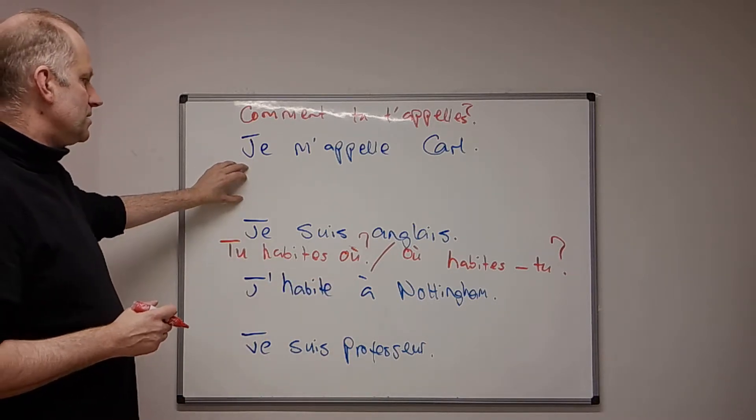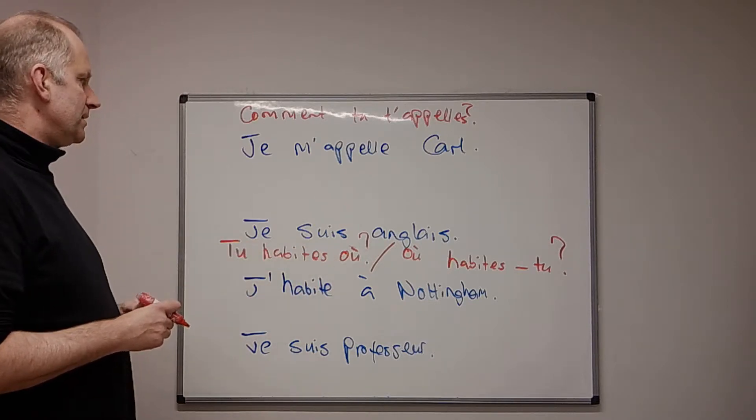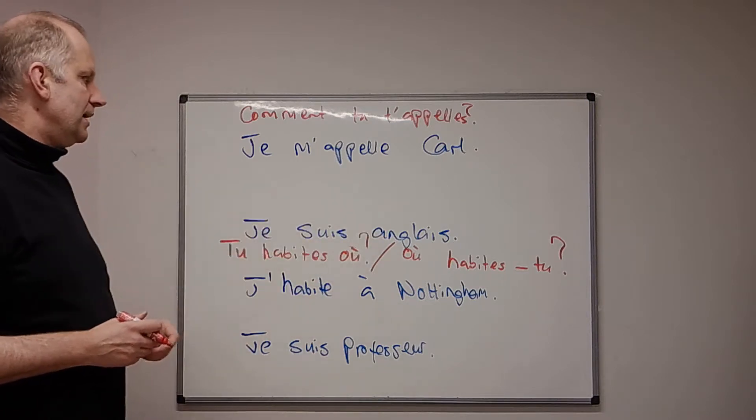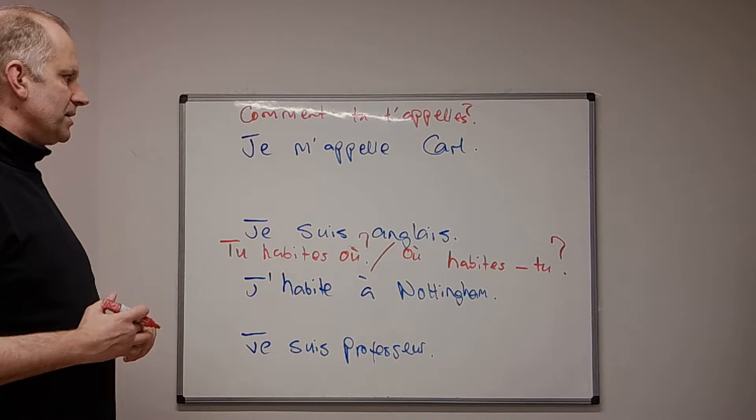So, now we can come back to the second question. We've got the word où, meaning where. So, je suis anglais, I'm English, so talking about my nationality.